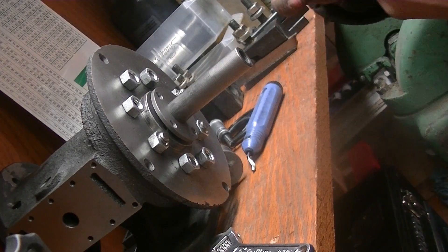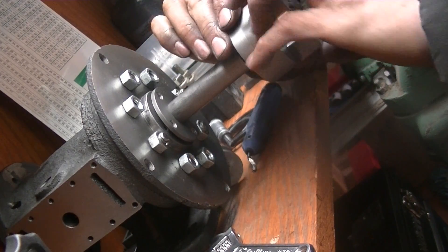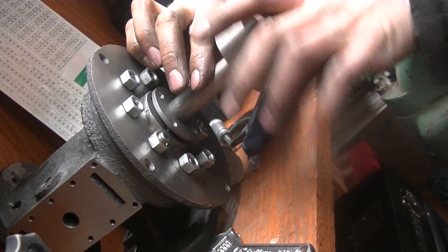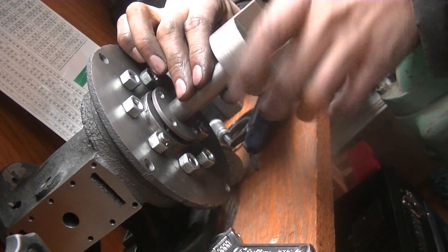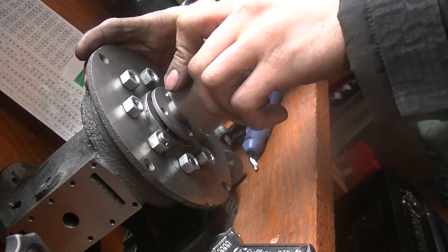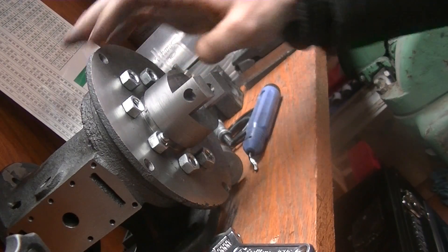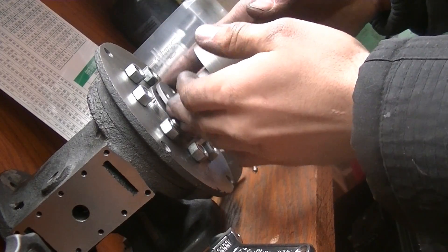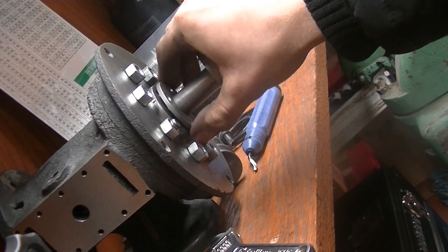Then when the crosshead is on, it should go right over it, just like that. So that's pretty much it, that's the stuffing box.